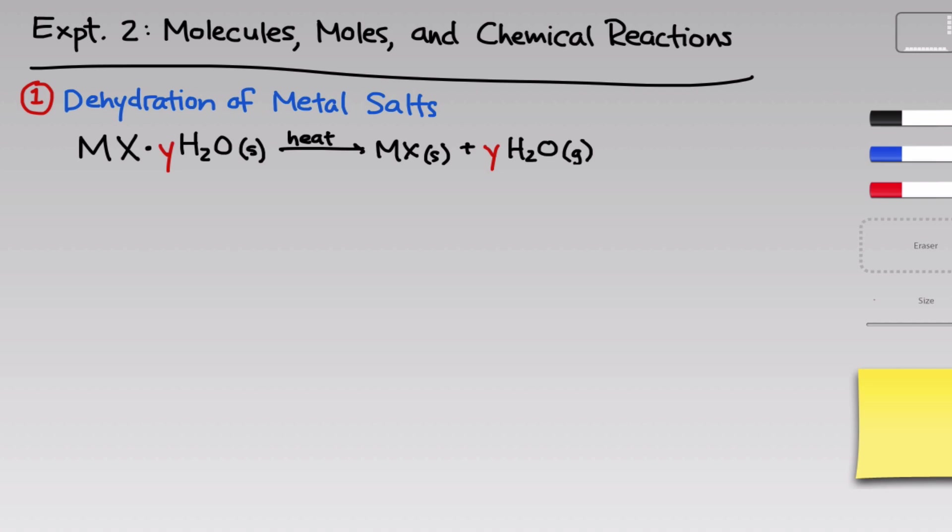The experimental apparatus is relatively simple. We'll take a sample of that solid hydrated salt and place it inside a small porcelain container called a crucible.